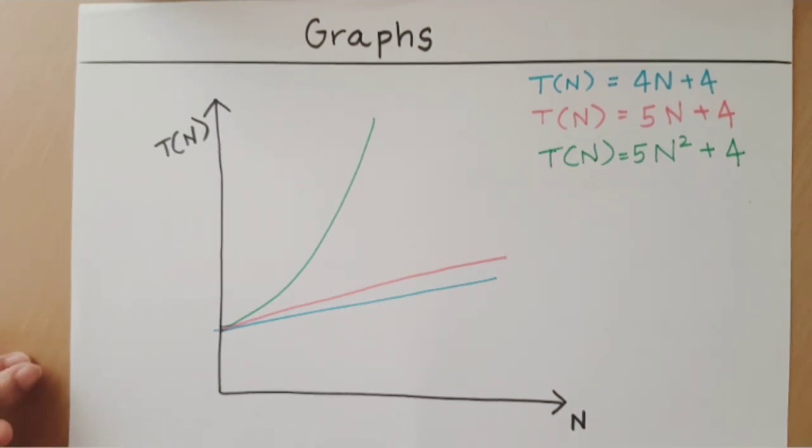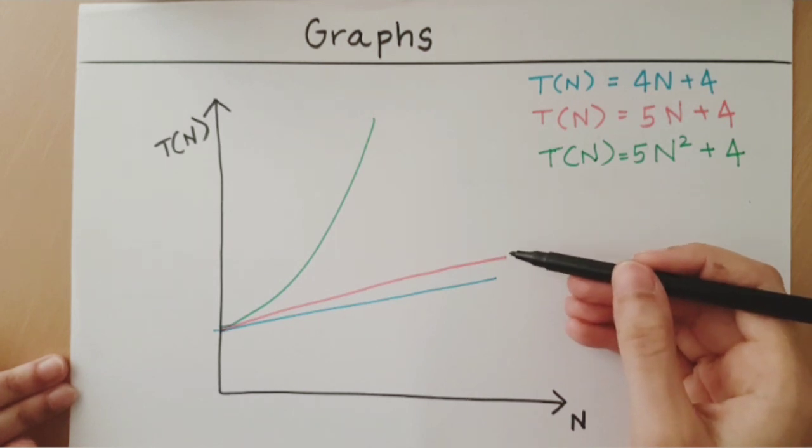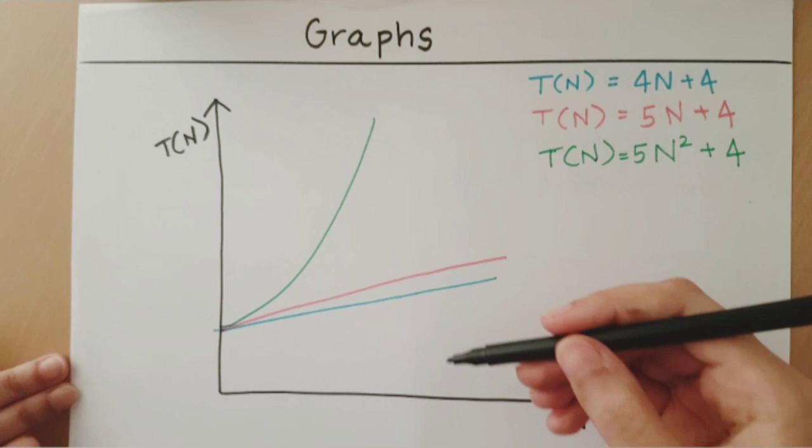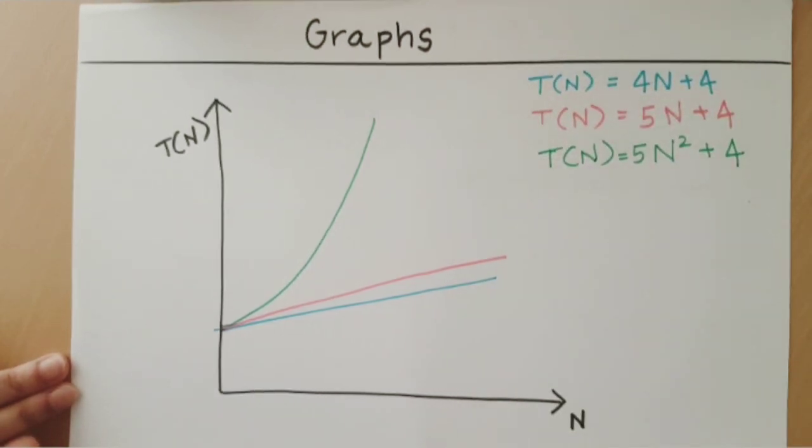As you can see, the difference between two linear functions is almost insignificant when you compare the difference between a linear function and a quadratic function. When we analyze algorithms, we do not want to worry about how the algorithm is implemented. Instead, we only want to look at how the time grows with respect to the input size given. Therefore, we are only worried about the growth of the time of an algorithm and not the actual details of the time itself.